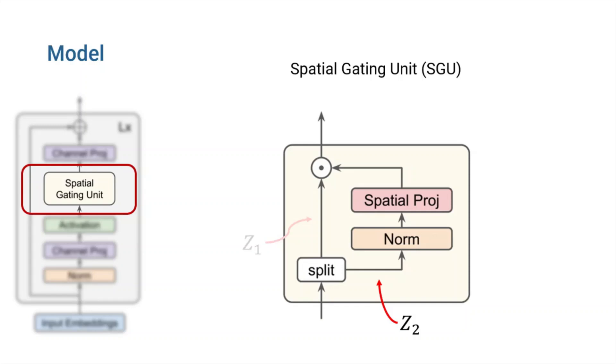We first normalize Z2 to improve the stability of our model. This layer must have a contraction operation across the spatial dimension in order to allow cross-token interactions. A linear projection is the most straightforward choice. Unlike self-attention, where W is created dynamically from Z, the spatial projection matrix W in this case is independent of the input representations.